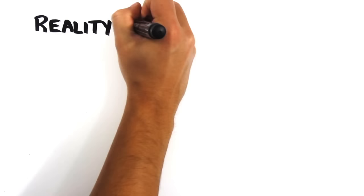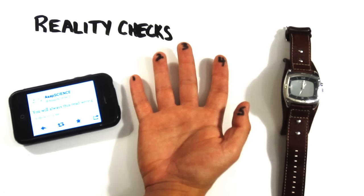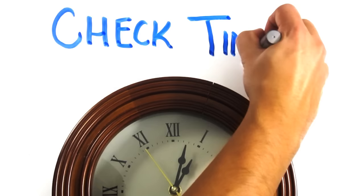The next step is performing reality checks. In a dream, something as simple as reading a sentence, counting your fingers, or checking the time can often go astray. Try it right now. Look at the time, look away, and then look back. Assuming you aren't currently dreaming, the time probably stayed the same.